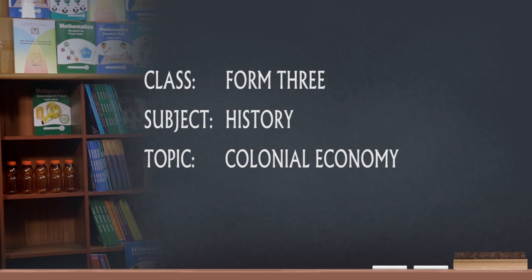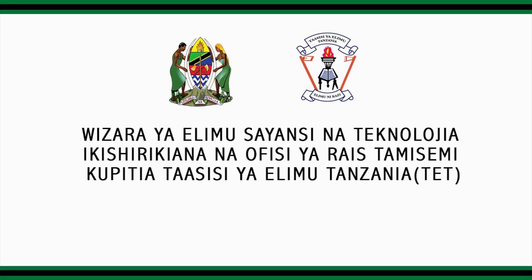Now we are going to elaborate the characteristics of colonial economy. Characteristic features of colonial economy are: A. It was an export-import oriented economy. B. It was monoculture in nature. C. Colonial economy also involved construction of physical infrastructures. D. It also involved massive land alienation. E. Establishment of small processing industries. F. Dominance of Europeans in trade.